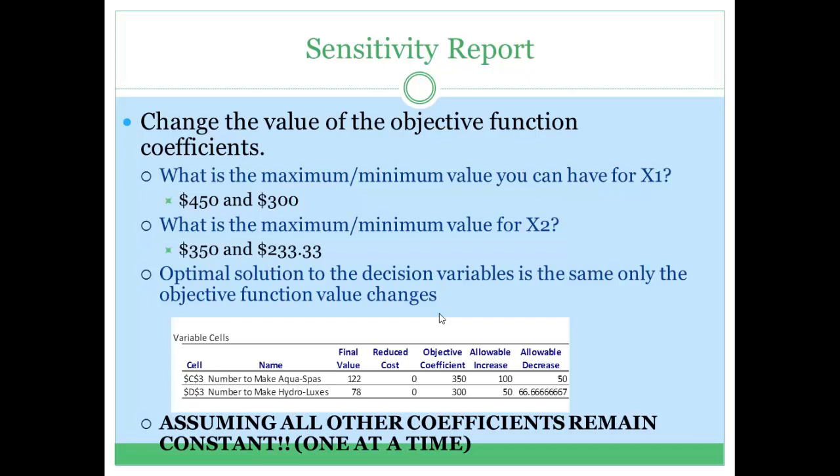What does this mean when I say optimal solution? I mean the values of the decision variables, x1 and x2. The final value of aqua spas at 122 and hydroluxes at 178 don't change. If I keep the coefficient between $300 and $450 for aqua spas, I will still get this solution.